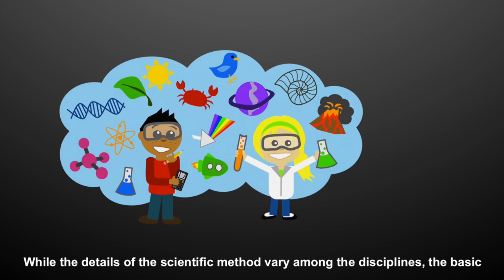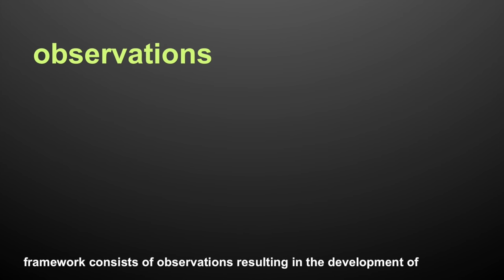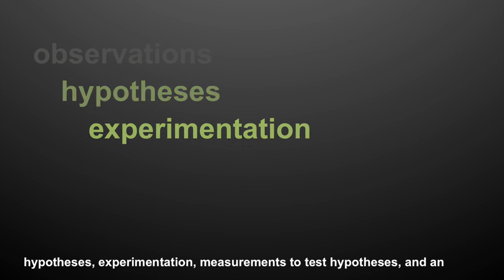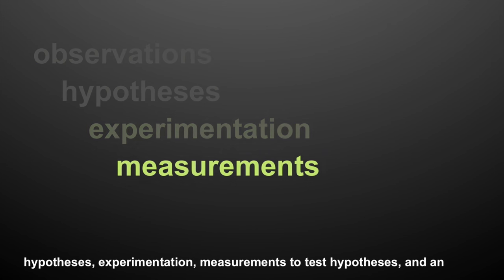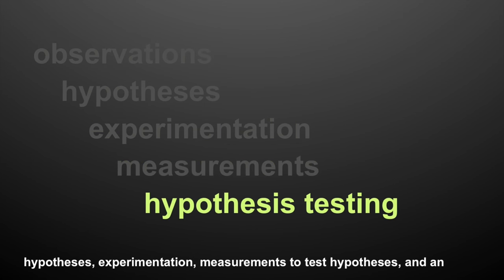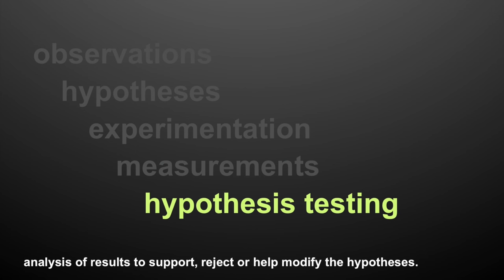While the details of the scientific method vary among the disciplines, the basic framework consists of observations resulting in the development of hypotheses, experimentation, measurements to test those hypotheses, and an analysis of results to support, reject, or help modify the hypotheses.